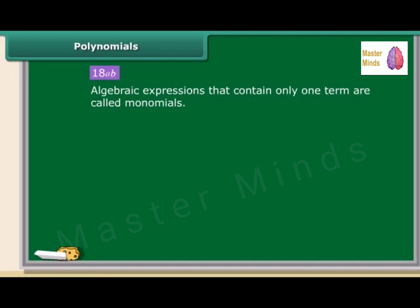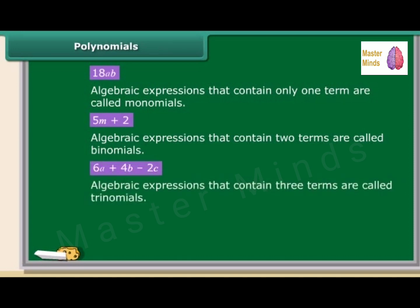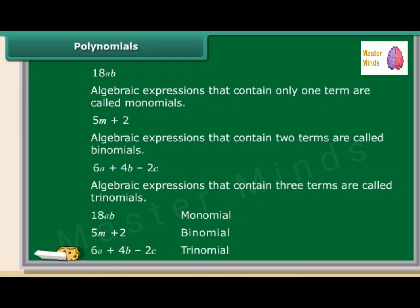An algebraic expression with only one term is called a monomial. An expression with two terms, such as 5M + 2, is called a binomial. An expression with three terms, such as 6A + 4B − 2C, is called a trinomial. Remember, all algebraic expressions with one or more terms are called polynomials. Therefore, monomials, binomials, and trinomials are all polynomials.